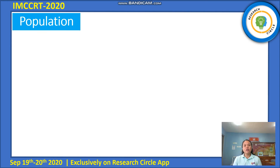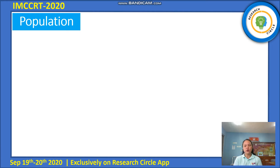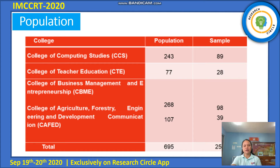The respondents of this study are the second year college students of the Ilocos Polytechnic State College Santa Maria campus for the school year 2020–2021. They are the second batch of students in the newest general education subject, mathematics in the modern world. The researcher used Slovin's formula to determine the sample size and random sampling techniques in determining the samples.